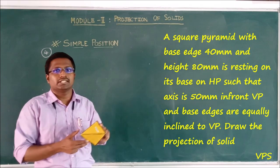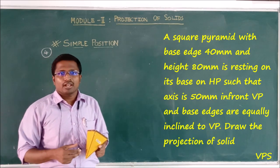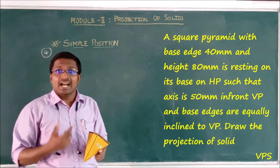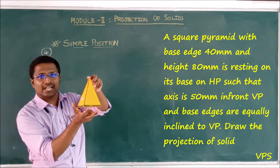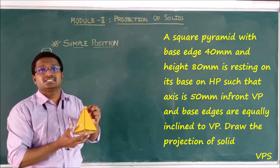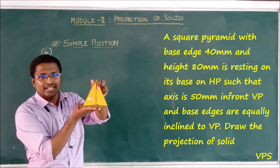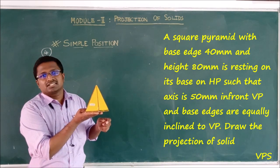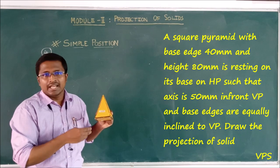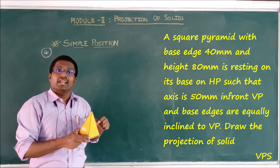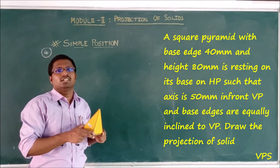The square pyramid is already defined. The problem is: a square pyramid with a base edge of 40mm has a height of 80mm. This is the base edge — 40mm. The height is 80mm and it is resting on HP. It is positioned such that the axis is 50mm in front of VP. The base edge is equally inclined to VP.